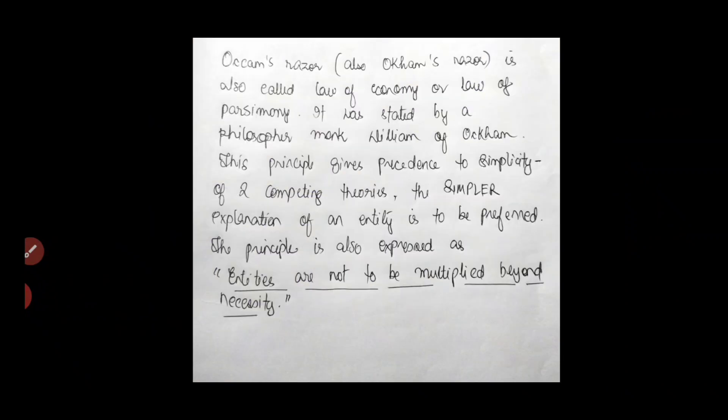So this is Occam's razor as written in Britannica. It is also called the law of economy or the law of parsimony. It was stated by a philosopher, monk, William of Occam. This principle gives precedence to simplicity. Means giving priority, giving more importance to simplicity.